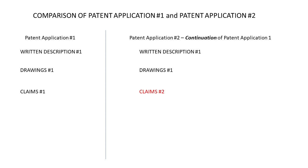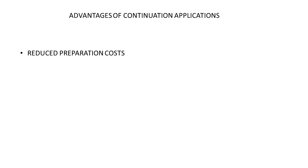Where they differ is in the claims — the continuation application has a new set of claims. That set of claims must be based on things disclosed and described in the existing written description and drawings. So basically, in order to take advantage of this type of application, we need to claim things that were described in the written description and drawings of the original application, which are essentially copied over to make the new patent application.